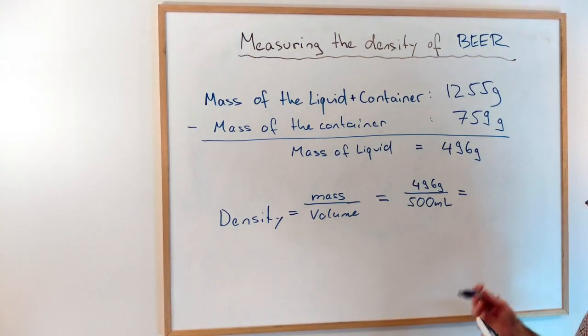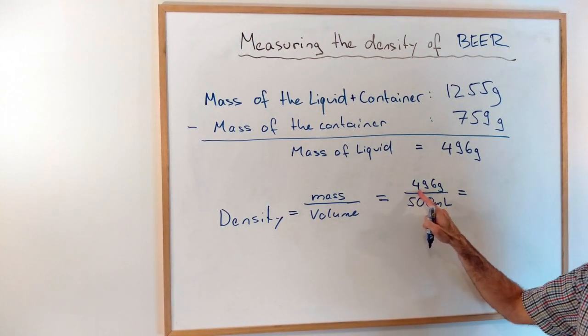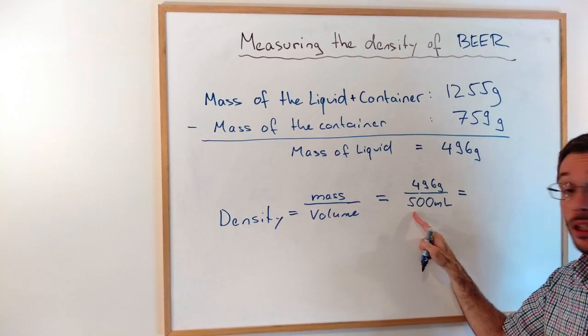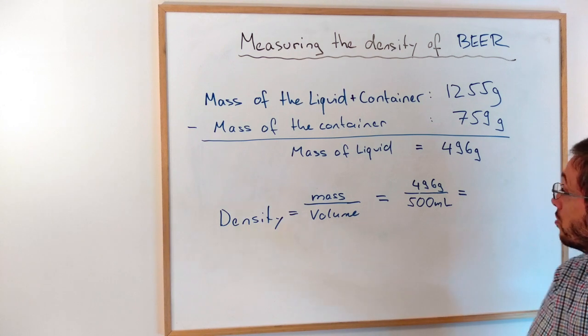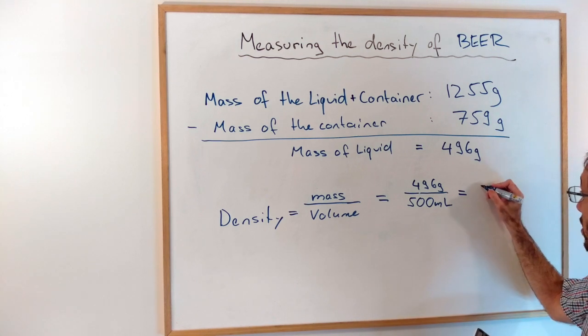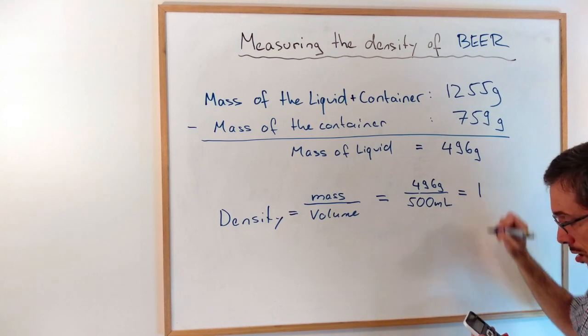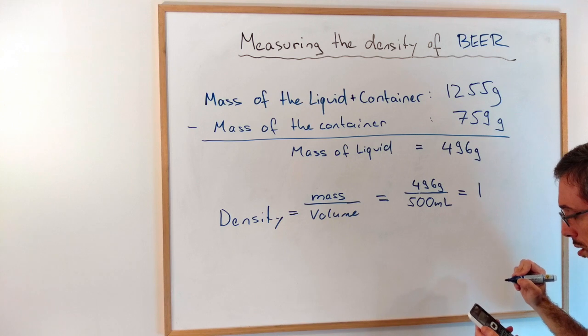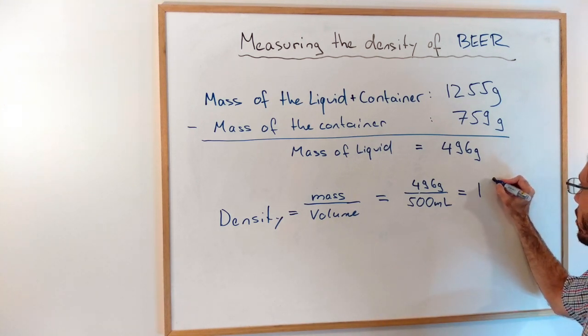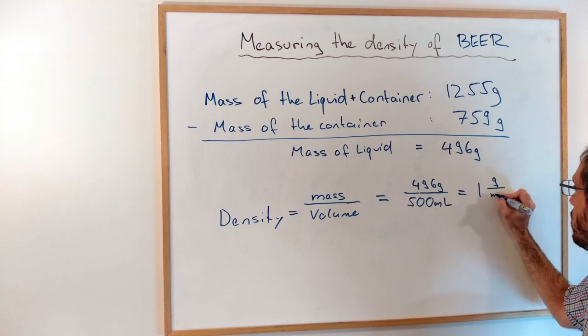Now, due to the rules of significant figures, I have one, two, three significant figures here. I have only one significant figure down here—I couldn't measure it more precisely than that. I will have to round this to one significant figure, so the answer is around 1 gram per milliliter.